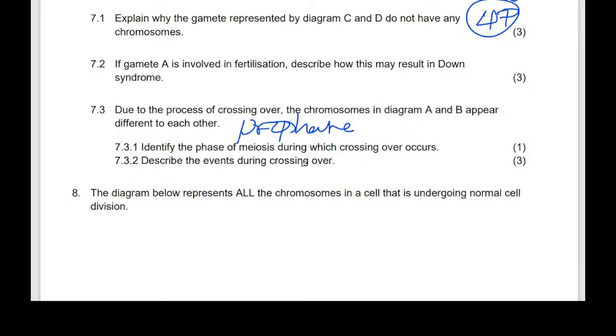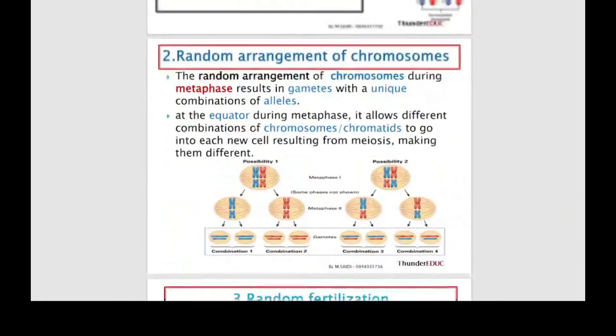They're saying that describe how the event, they're saying that identify the phase. This is for phase one. This is what I said here in the booklet, crossing over.